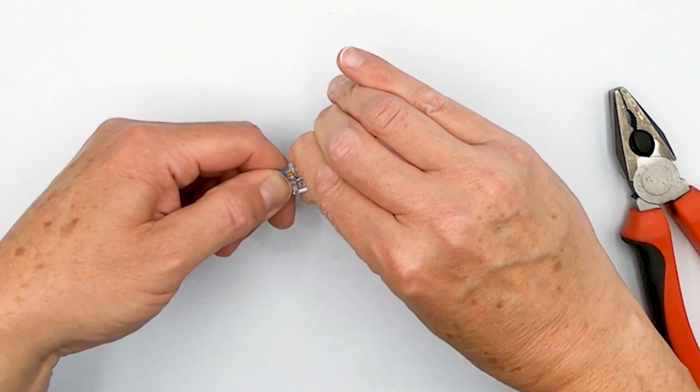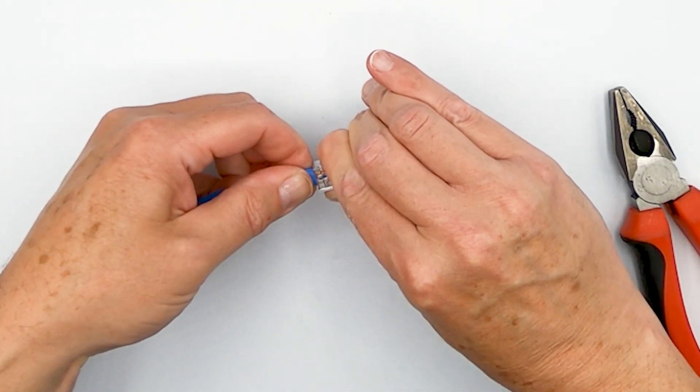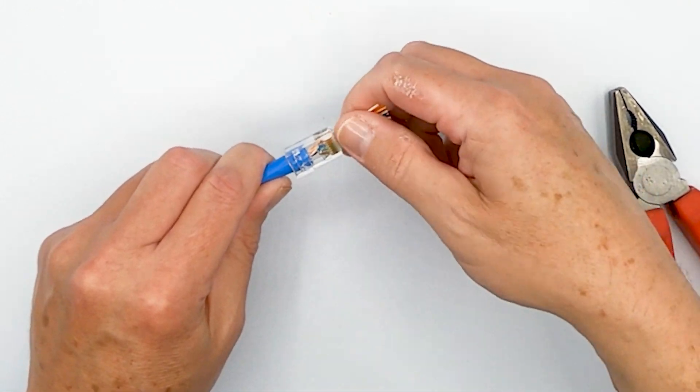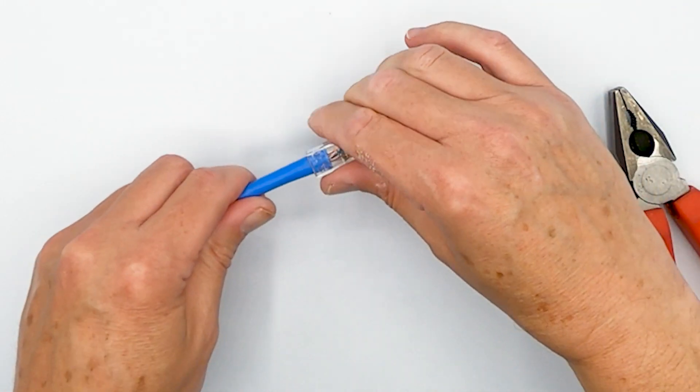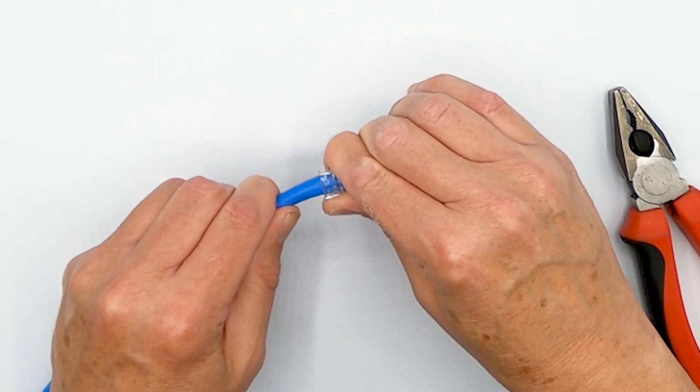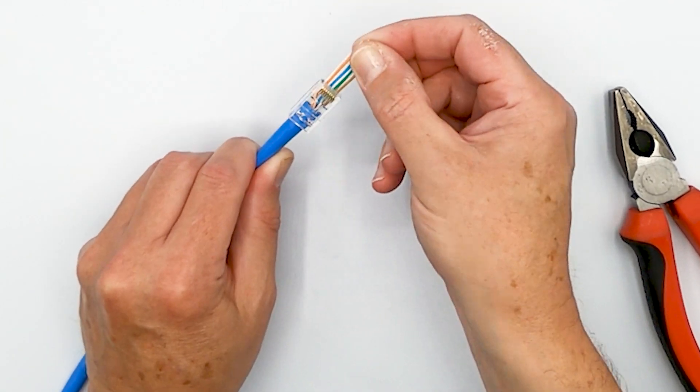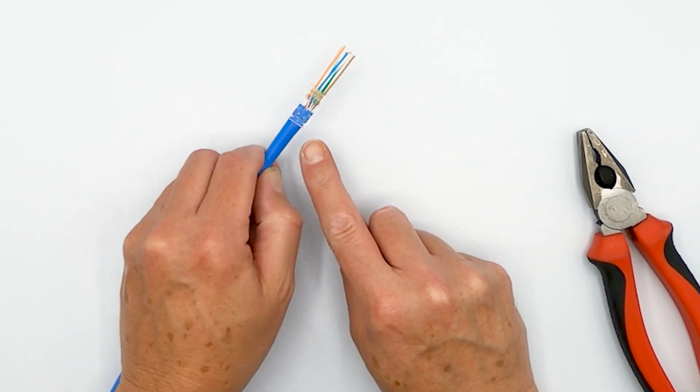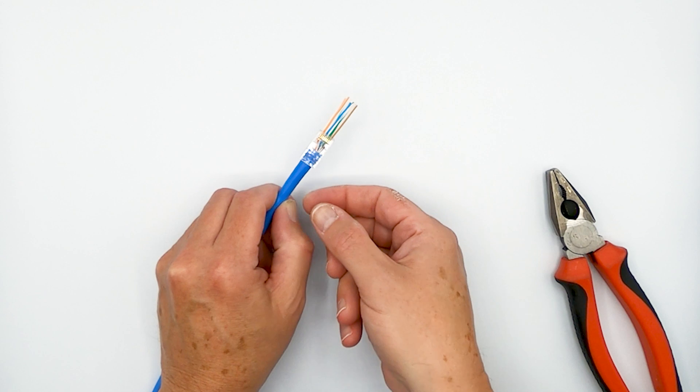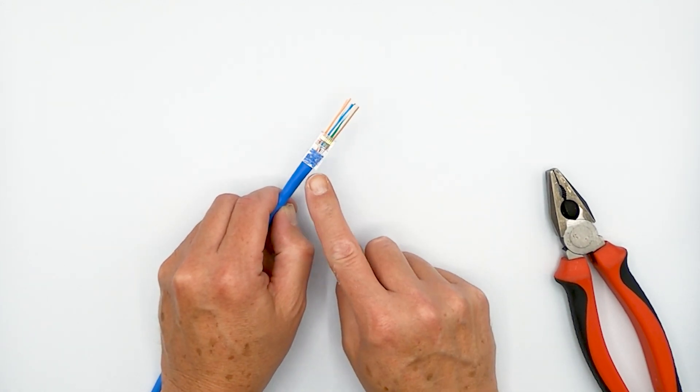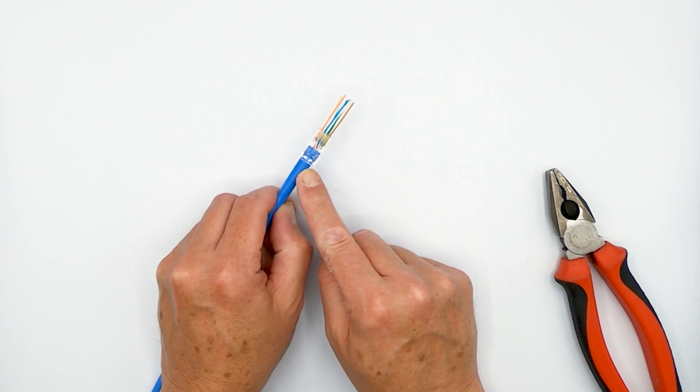And then before it springs back into shape on you, because it will, it'll spring back to a circle real quick. Start pushing this guy in there. And there it goes. Get it in there at least to the past the ledge. And we've got it. So, that's how you ovalize category 6A or just in general thick Ethernet cable to fit into a plug where it's designed to fit. It's just that it needs to be ovalized to go first.